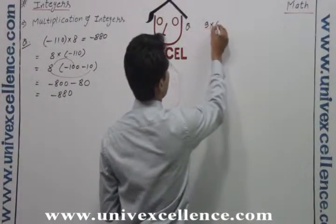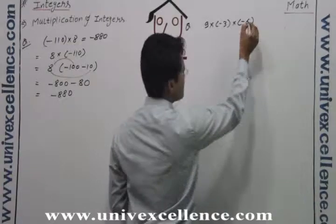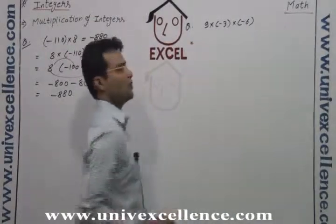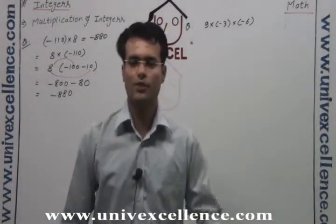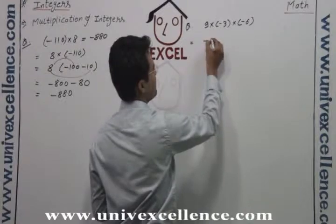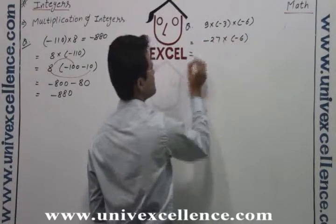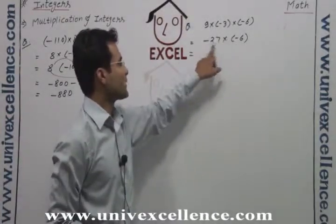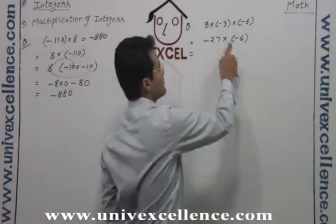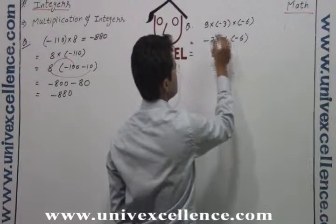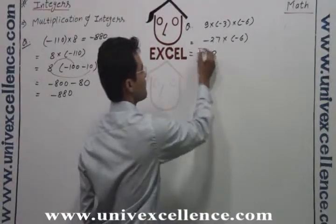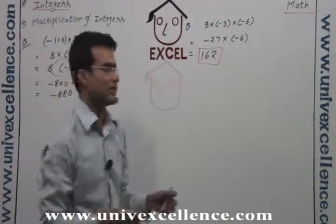Next: 9 multiplied by minus 3 multiplied by minus 6. By the associativity property there is no problem with order. First, 9 into minus 3 is minus 27, then multiplied by minus 6. There are two minus signs so they make a positive. Then 27 into 6: 7 into 6 is 42, giving 162. That is the answer.